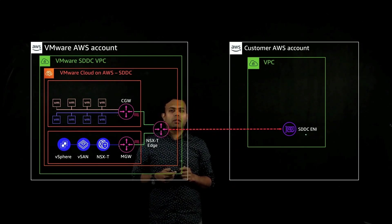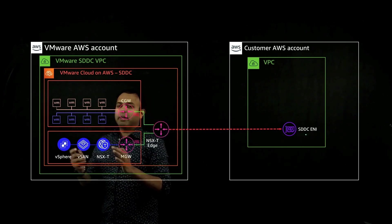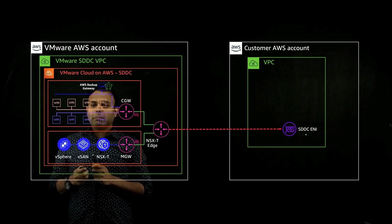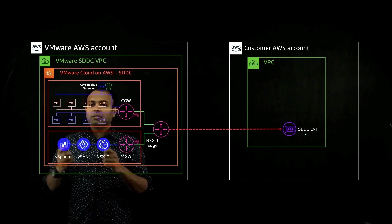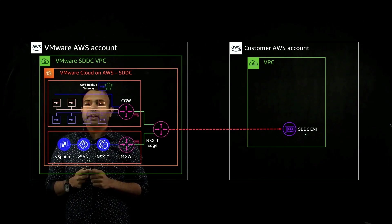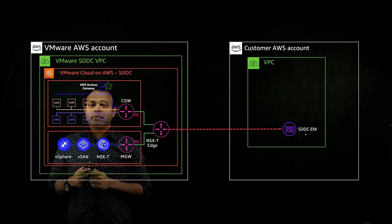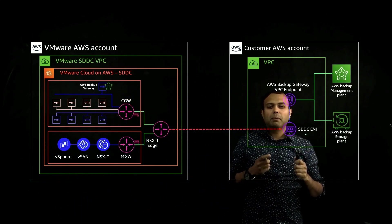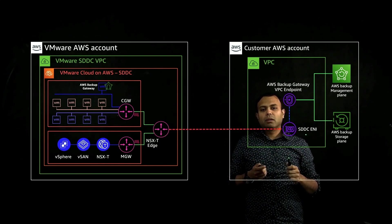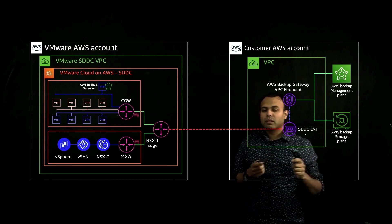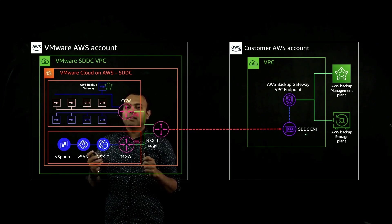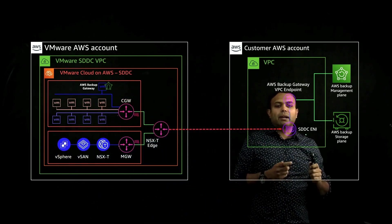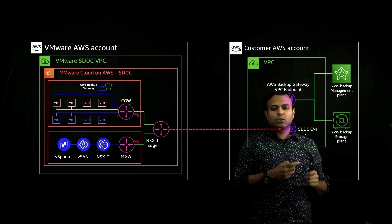One such AWS native service is the AWS Backup Service, using which we can protect workloads that are sitting on VMware Cloud on AWS. To begin doing that, you deploy something called the Backup Gateway Appliance, which is essentially a VMware OVA file that you install in one of these compute segments behind the compute gateway. This could be an existing compute segment, or it could be a compute segment that stands on its own. Once you have the AWS Backup Gateway Appliance deployed, you create something called the AWS Backup Gateway VPC endpoint. This establishes the communication between the AWS Backup Service and the AWS Backup Gateway Appliance, which basically acts as a backup proxy that relays all of the information from the VMware Cloud on AWS SDDC environment to the AWS Backup Service, aided by the management plane and the storage plane.